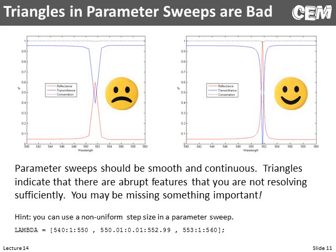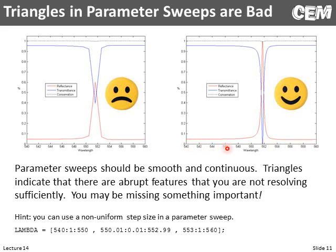Here are two plots of the same device. On the left I see triangles — this tells me we're missing information. If we go ahead and fill in that information, we now see nice smooth lines, and it tells a completely different story: reflectance actually goes up to 100%, whereas we only got it at 60% before. Anytime I see triangles in a response, that immediately tells me we're missing information. A useful trick: your frequency or wavelength axis does not have to be uniform — you can use fine steps only where the response changes abruptly.